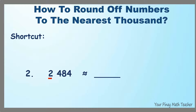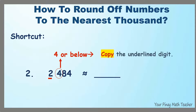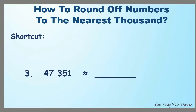Number 2: the thousands digit is 2. The digit to its right is 4. If the encircled digit is 4 or below, just copy the underlined digit. So, copy 2 and the rest of the digits become 0s. Thus, 2,484 is rounded off to 2,000.